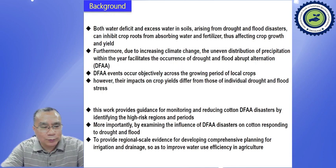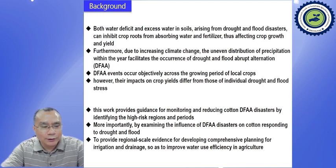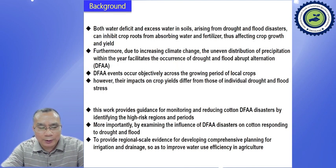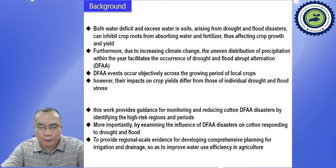This work provides guidance for monitoring and reducing cotton DFAA disasters by identifying the high-risk regions and periods. More importantly, by examining the influence of DFAA disasters on cotton responding to drought and flood, our purpose is to provide regional-scale evidence for developing comprehensive planning for irrigation and drainage so as to improve water use efficiency in agriculture.